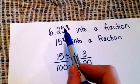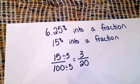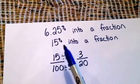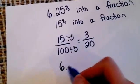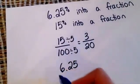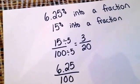Okay, so let's go back up here to our 6.25% into a fraction. And the first thing we're going to want to do is we could put, just like we did with the one above, 6.25 over 100 and reduce that way if we wanted to.